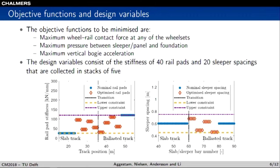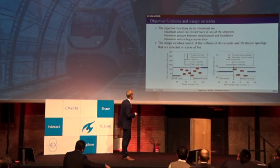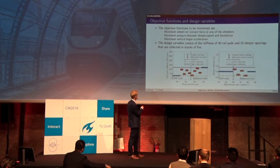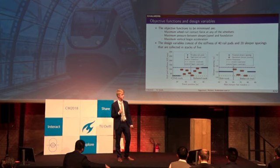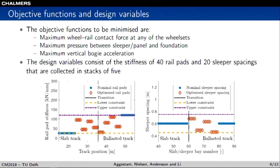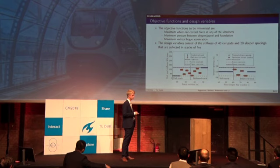The design variables consist of the stiffness of 40 rail pads and 20 sleeper spacings, collected in stacks of five. So the first five rail pads must have the same stiffness value, the next five have the same value, and so on. We constrained the problem in this fashion for two reasons: first, it would not be practically relevant to have 40 different rail pad stiffness values and 20 different sleeper spacings; second, it increases the convergence rate of the genetic algorithm by using only 12 design variables rather than 60 independent ones.